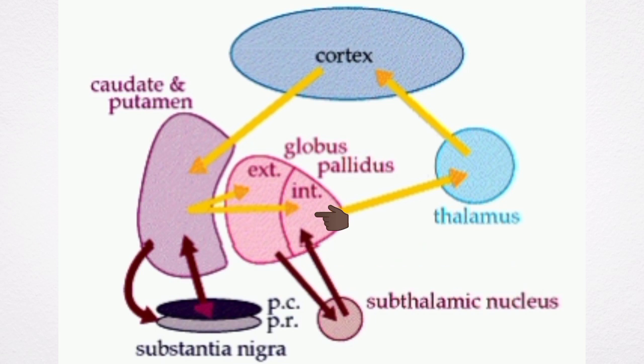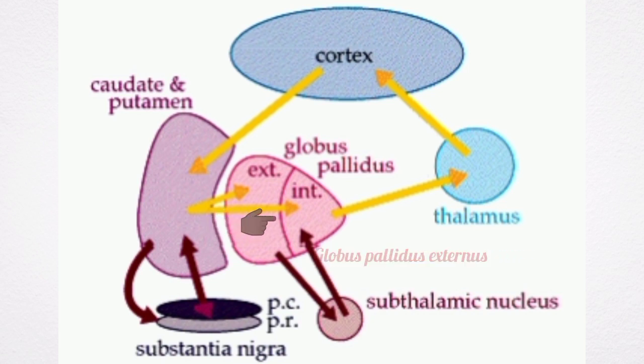The globus pallidus has two parts: the globus pallidus internus, also called the internal globus pallidus, and the globus pallidus externus, also called the external globus pallidus.